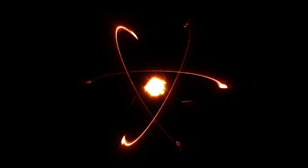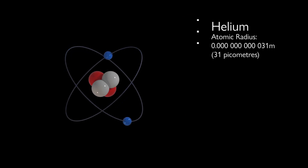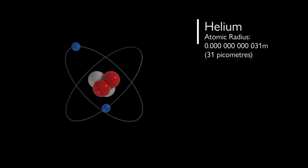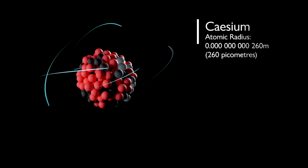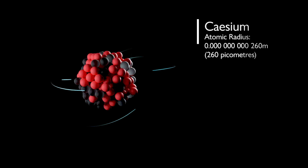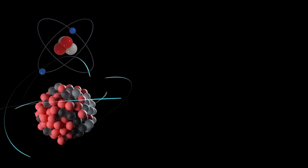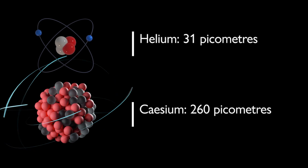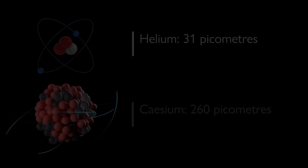Atoms are less than one billionth of a metre across. The smallest atom is helium, with a radius of around 31 trillionths of a metre. And even the largest, caesium, has a radius of only 260 trillionths of a metre. These numbers are mind-bogglingly small, and so I'm going to take us down to the scale of atoms in a series of steps.